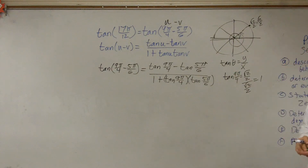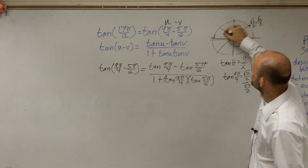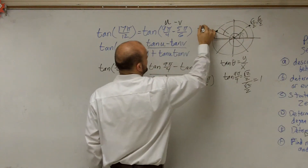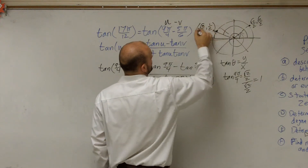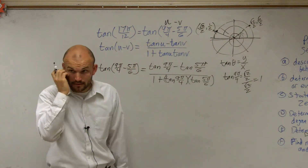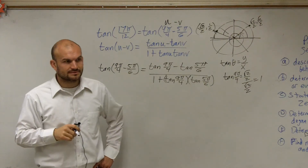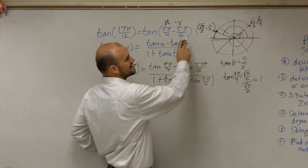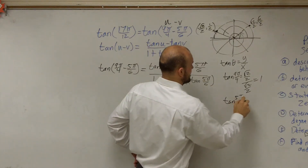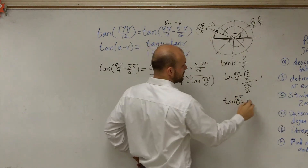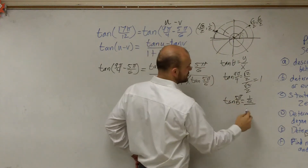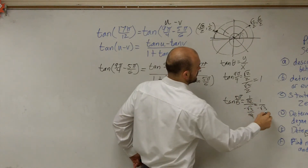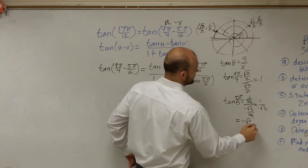Now let's look at 5π/6. The coordinate point at 5π/6 is (−√3/2, 1/2). So the tangent of 5π/6 equals y over x, which is (1/2) divided by (−√3/2). After rationalizing the denominator — multiplying by √3/√3 — we get negative square root of 3 over 3.